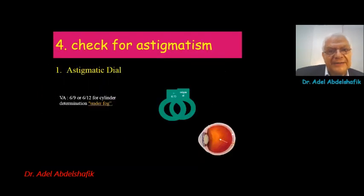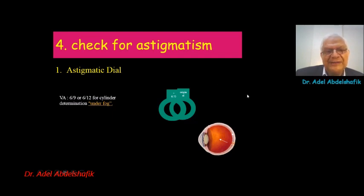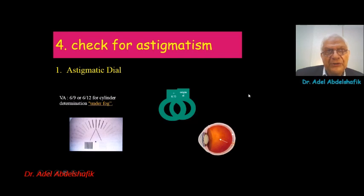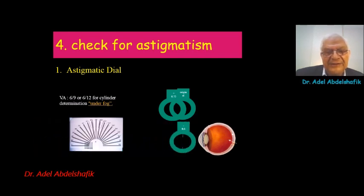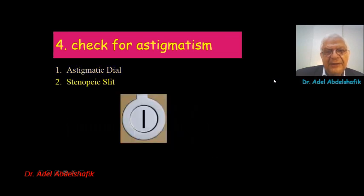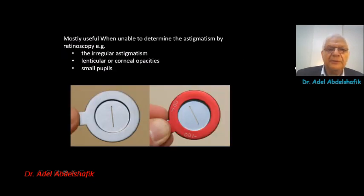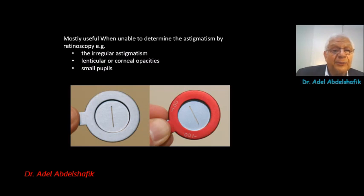Now we need to check for astigmatism, which can be done using the astigmatic dial. After reaching the expected spherical correction, we apply some fogging, show the patient the astigmatic dial, and correct with the cylinder until all lines appear the same. We can also detect astigmatism in cases of irregular astigmatism, lenticular or corneal opacity, or a small pupil, where retinoscopy cannot detect astigmatism reliably.